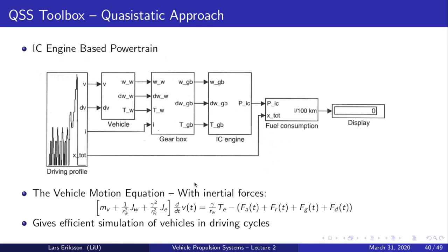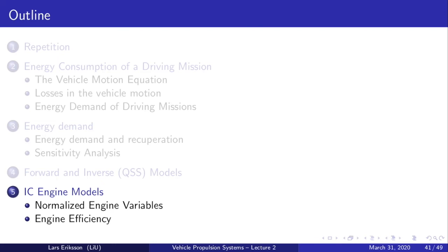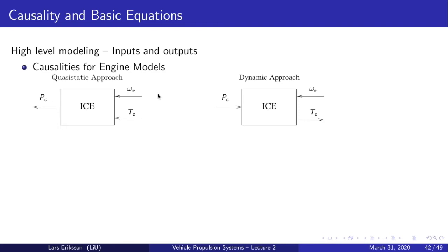The rest of this lecture will be devoted to the combustion engine and how we can model it to fit this framework. Now we turn attention to internal combustion engine models — how to model it both the normal way and with the quasi-static approach. In the quasi-static approach, we come with information from the gearbox: a certain angular velocity and torque request, and the combustion engine model tells us how much chemical power we're consuming. In the dynamic approach, the driver uses the gas pedal to request fuel flow that gives torque to drive the vehicle forward, with the engine and vehicle together determining angular velocity.